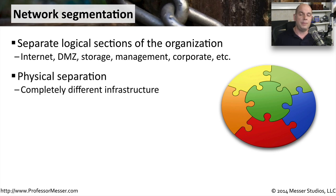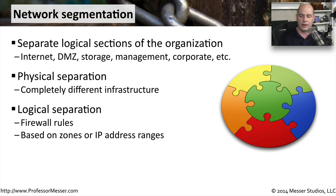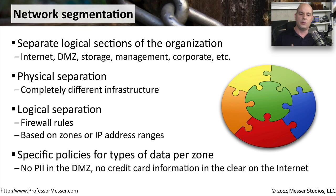The segmentation may be physical — we might have separate switches, separate routers, and separate security infrastructure for each individual section of the network. Or we might set this up to be more logical. We might have separate zones in a firewall, or separate out rules based on IP address, destinations, or sources. By doing this, we can create a logical separation without needing additional hardware or infrastructure to protect these parts of the network. We want to think about how we want to separate out the network, and then create separate security policies based on these separate zones.